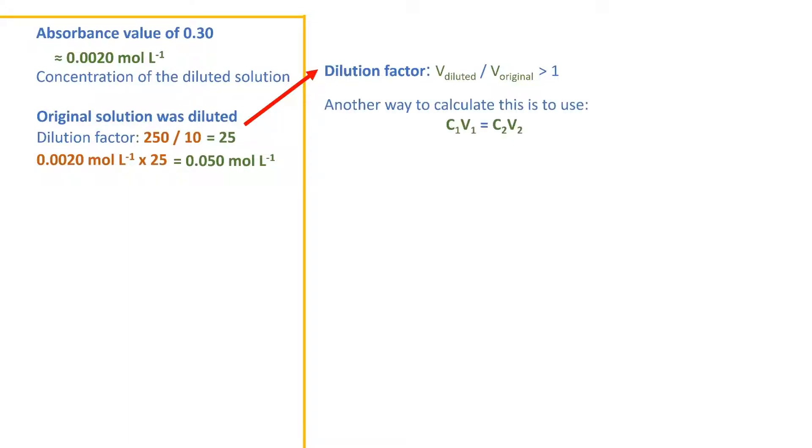Another way to calculate this is to use the formula C1V1 is equal to C2V2, where 1 and 2 are the two solutions. It doesn't matter which you label the diluted and which the original, so long as you are consistent. If we say 1 is the dilute solution, we can plug in the values we know from the question, and then solve for C2,